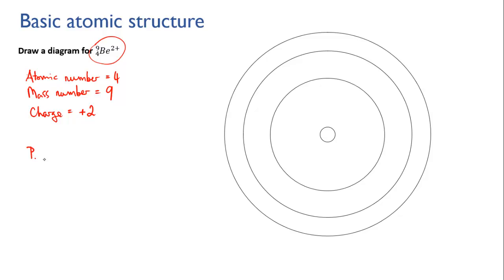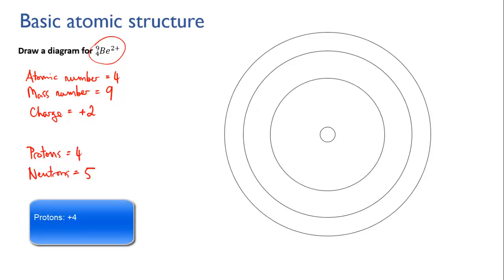Protons are easy — it's the same as the atomic number. The neutrons will be 9 minus 4, which is 5. So we have 5 neutrons. We know that the charge is plus 2, and we've got 4 protons giving a charge of plus 4 — but we don't know the number of electrons.